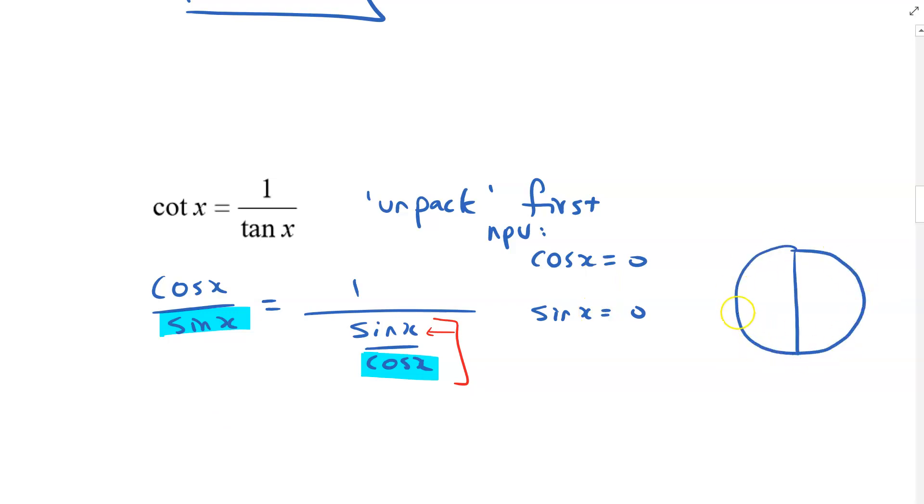So looking at my unit circle, that would include, that's when sin is equal to zero. When cos is equal to zero, it would be there and there. So looking at those four places, non-permissible values when x is equal to zero or pi over two or pi or three pi over two.